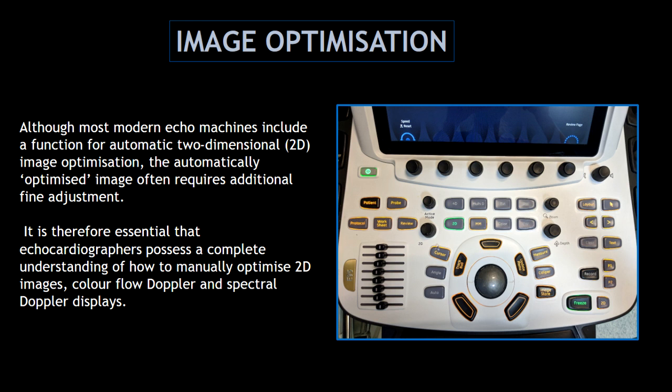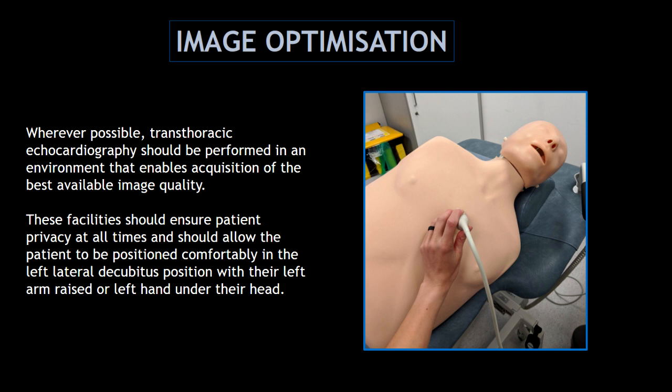Most echo machines include a function for automatic two-dimensional image optimization. However, this often requires additional fine adjustment. That's why it's essential that echocardiographers possess a complete understanding of how to manually optimize 2D imaging, color flow dopplers, and spectral doppler displays. When possible, the transthoracic echocardiography should be performed in an environment that enables acquisition of the best available image quality.